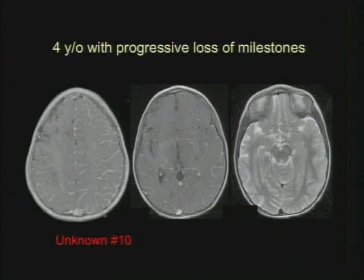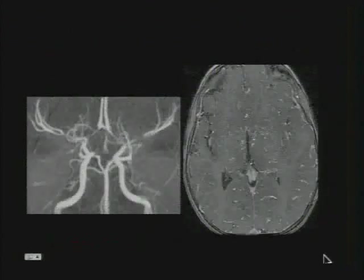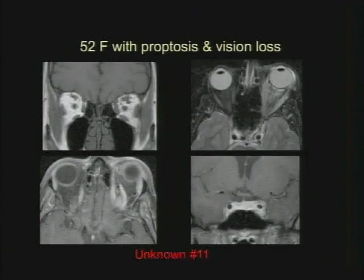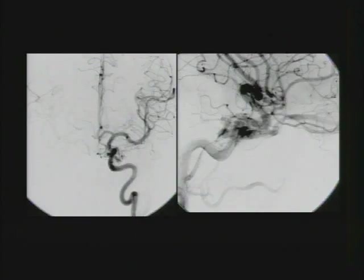Here's a four-year-old with progressive loss of milestones, similar to a case that Dr. Glenn showed earlier — post-contrast T1-weighted and axial T2. And here is the MR angiogram in that same patient. The last unknown case is a 52-year-old with proptosis and vision loss. Here's the conventional angiogram in that same patient.